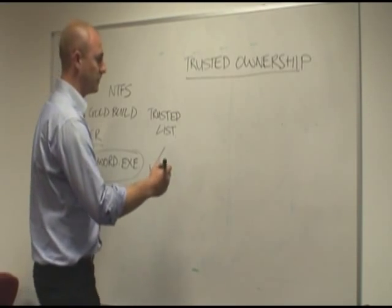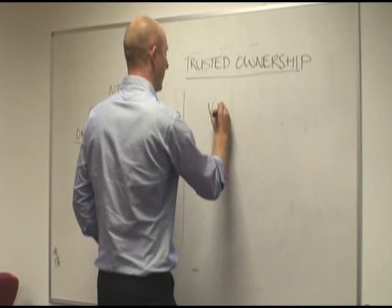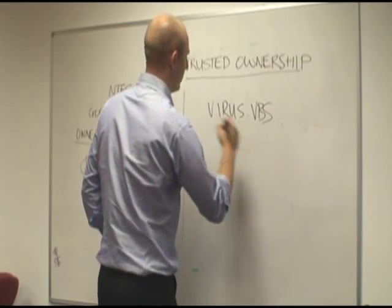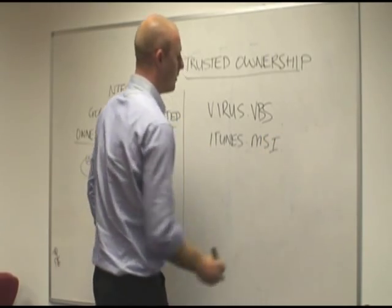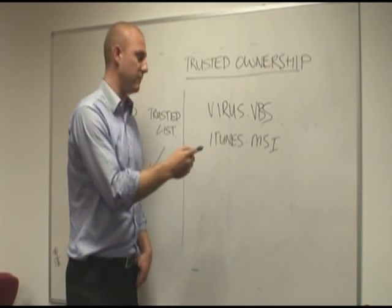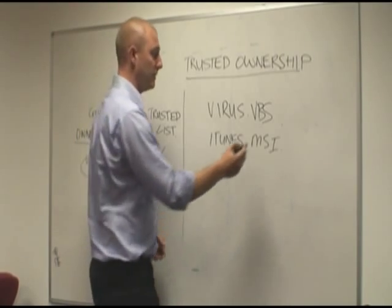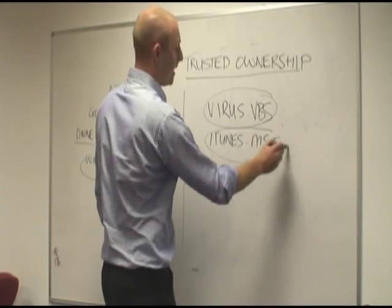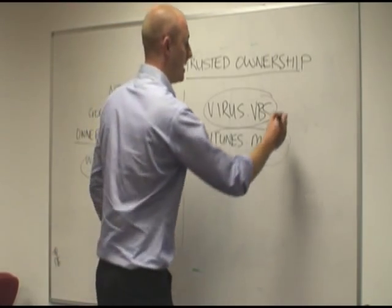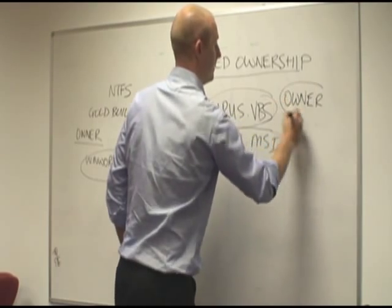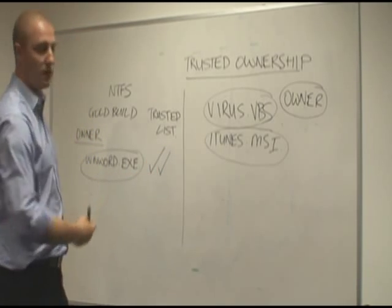So we have another executable. Let's say a user runs an executable — whether it is virus.vbs, whether it's iTunes.msi. All we're concerned about is anything that's going to execute at the processor level. Because the user has introduced this executable one way or another, it doesn't make a difference to us. We're not concerned with what the actual executable is, what the actual payload of the executable is — whether it is a virus or something just a very innocent installation. All we're looking at is who the owner of the file is. If the owner is part of the trusted owners list, we'll allow the executable to run, like we did with word.exe.